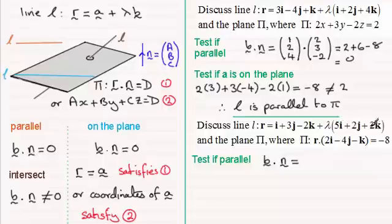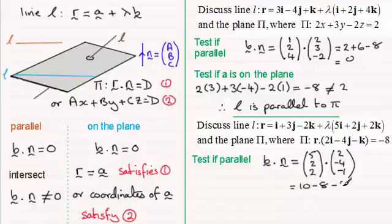So we'll do B dotted with N. This time B has the column vector (5, 2, 2). And we're dotting this with the normal vector which has components (2, -4, -1). And dotting this in the usual way, we get 10, then -8, and -2. And this comes to 0. So we know it's parallel.